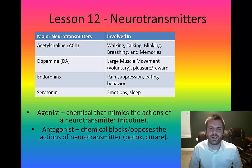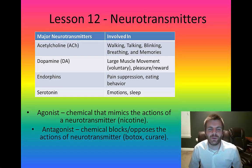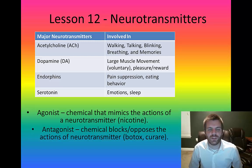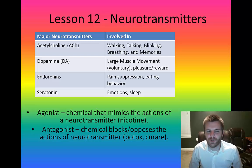It's worth noting that our bodies can actually accept chemicals that mimic neurotransmitters. Some of those are called agonists, and we also accept chemicals that block or oppose the actions of neurotransmitters, and those are called antagonists.